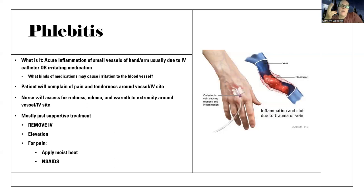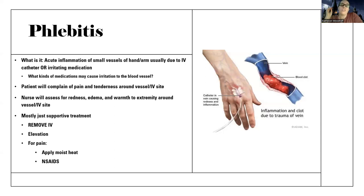I always want to bring up the point because students get this really confused: with a blood transfusion reaction, my body is reacting. If it's a hemolytic blood transfusion reaction, I'm going to be building up a lot of particles, so I want to flush out those particles - I always want to maintain my IV for blood transfusions because the problem is inside. There's no problem in my blood vessel, no problem with my IV. My body's reacting wrong. But with phlebitis, there's a problem in the blood vessel or with the device, so we need to remove it.